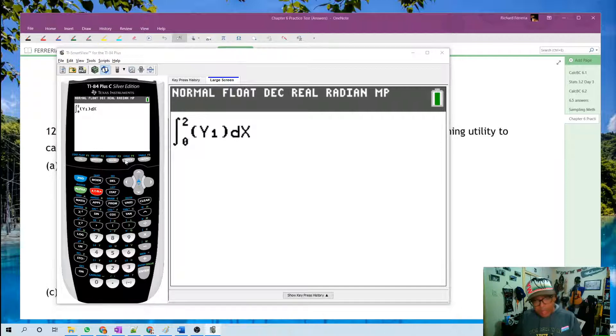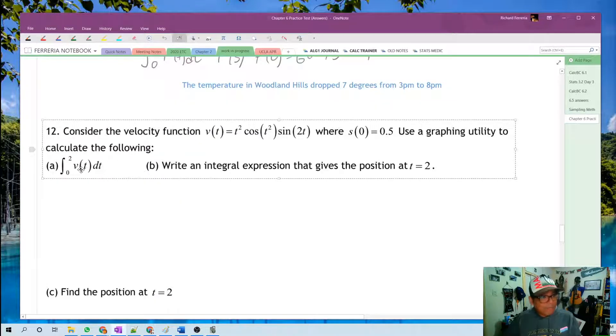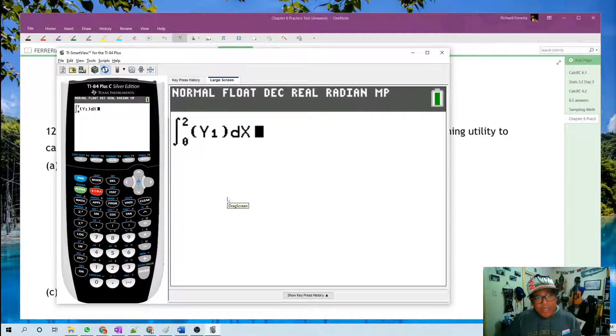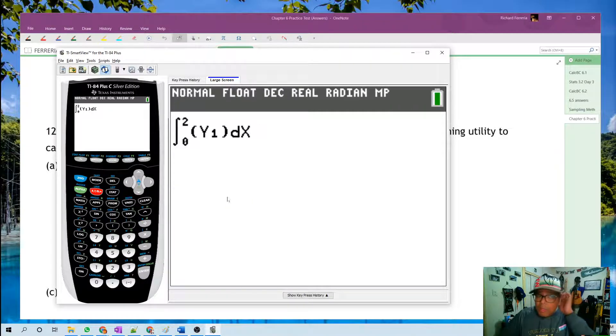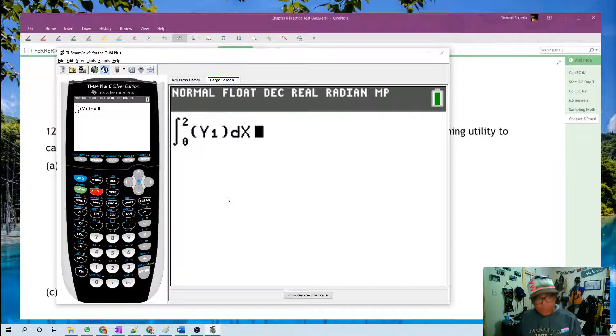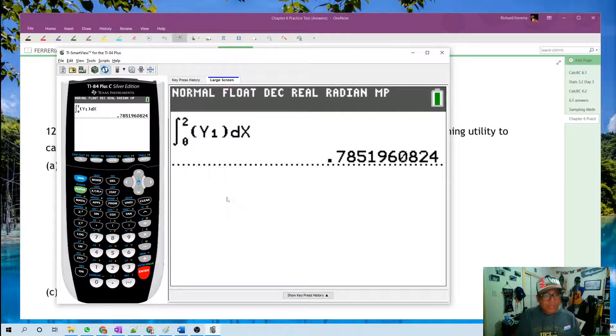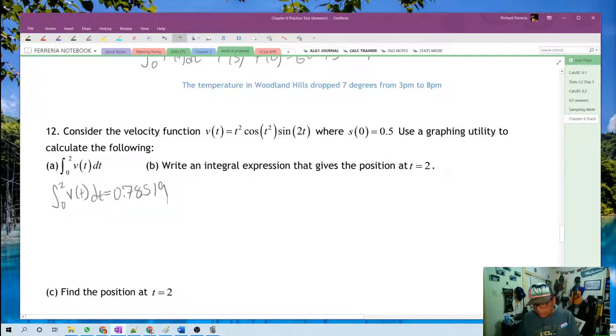Now, I know that this problem says v(t) dt, and v(t), of course, has all these t's in it, but your calculator can't do that. It has to turn everything to x. So just make everything in terms of x, and things will be a lot easier for you. So this is an easy problem. We're just going to do one integral, and we're going to get our answer. So that is 0.78519.